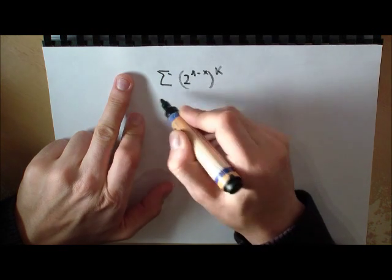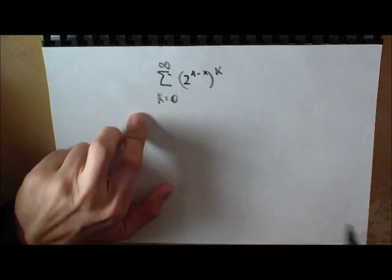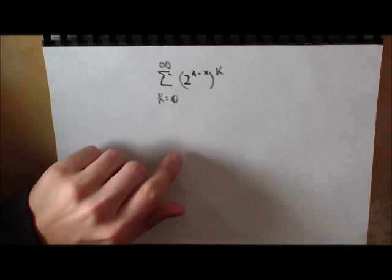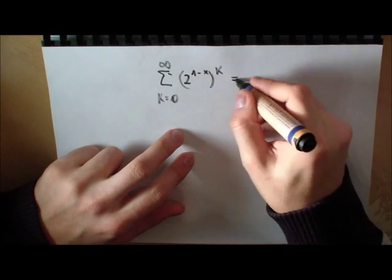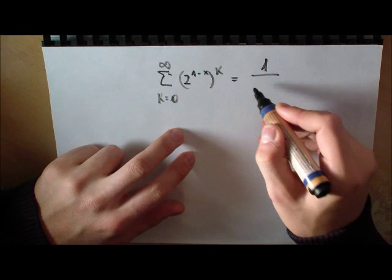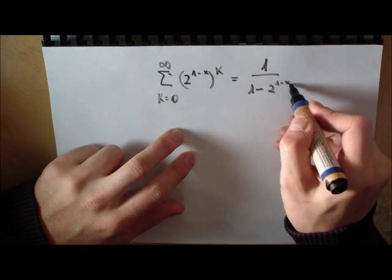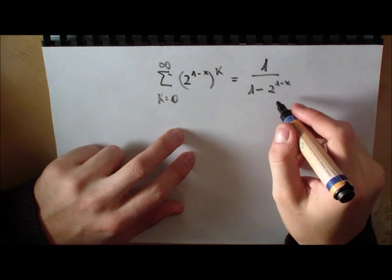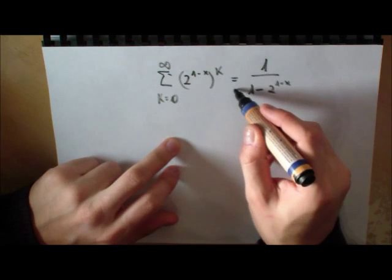And k is going from 0 to infinity. Now what we can do is we can calculate this using the geometric series formula: it's 1 over 1 minus 2 to the 1 minus x. This is only valid under certain conditions.